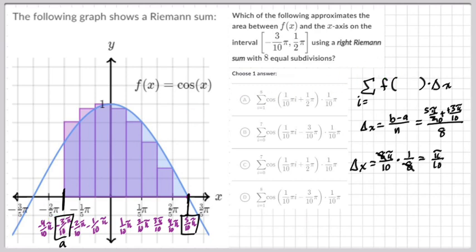a plus Δx·i. So Δx we found, i comes from this. What's a? That's our lower bound, -3π/10.